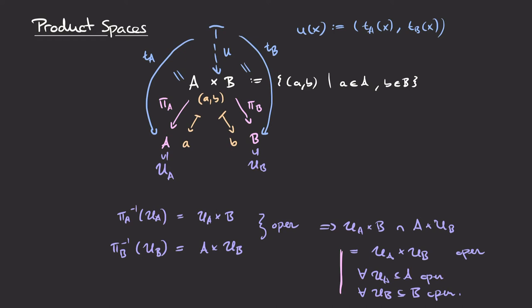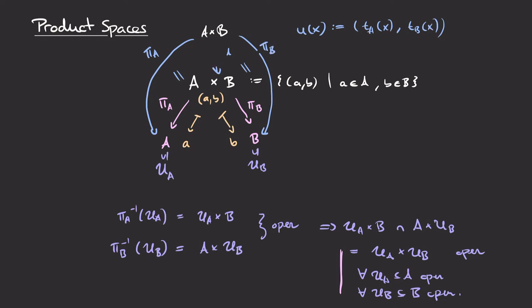The answer comes from thinking about the universal property we want the product space to satisfy. For any topological space T with continuous maps to A and B, we want a unique continuous map from T into the product. In particular, we could choose T to be A×B with some other topology, and choose the maps t_A and t_B to be the projections π_A and π_B. In this case, the unique map u will just be the identity on A×B.